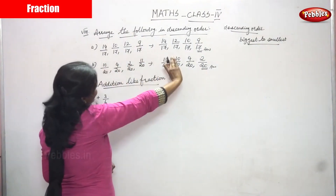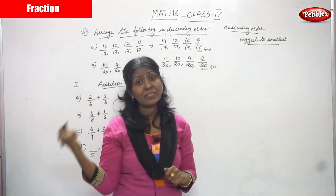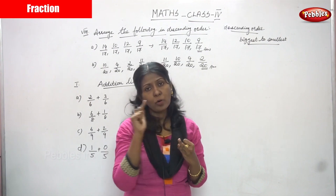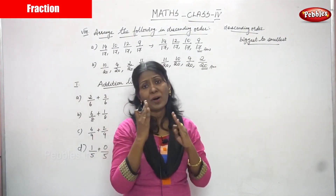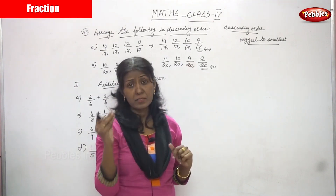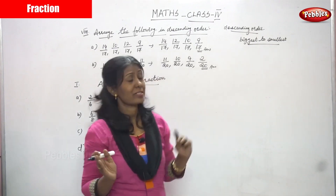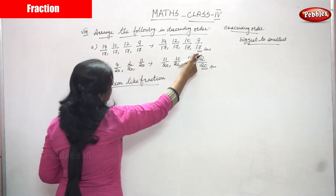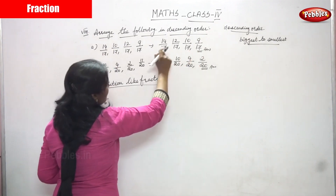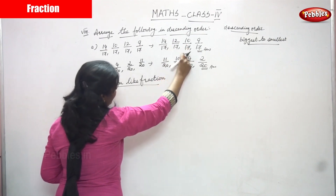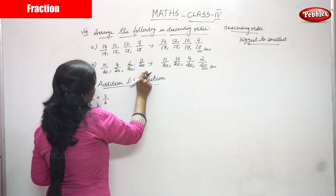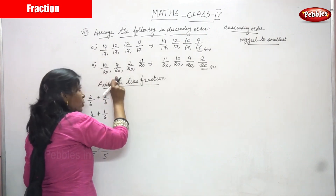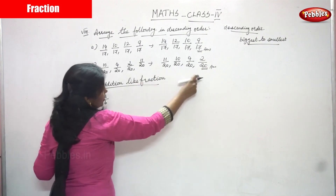Arrange the following in descending order means you have to start with the biggest fraction and end with the smallest fraction. First you have to see the denominator — if the denominator is the same, move on to the numerator. All the numerators are different, so arrange in descending order. In the first sum, 14 is the biggest, then 12, then 10, and 9 is the smallest. In the second sum, 11 by 20 is the greatest, then 10 by 20, then 4 by 20, and finally 2 by 20.